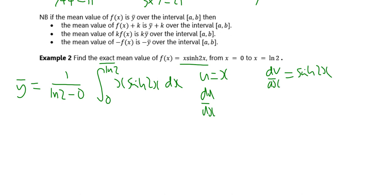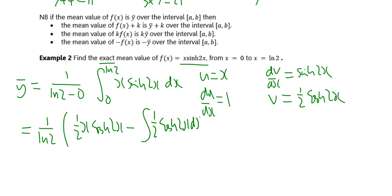If you differentiate that, you get du/dx is 1. If you integrate sinh 2x, you get a half cosh 2x. This is going to give me 1 over ln2 into, I'm not going to put the limits yet, so u times v is x times a half cosh 2x, minus the integral of v times du/dx, which is a half cosh 2x times 1, which is a half cosh 2x dx.